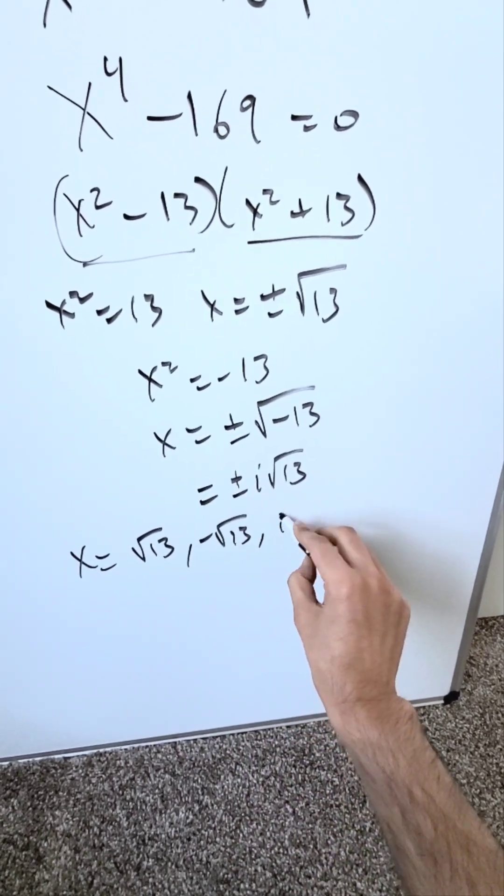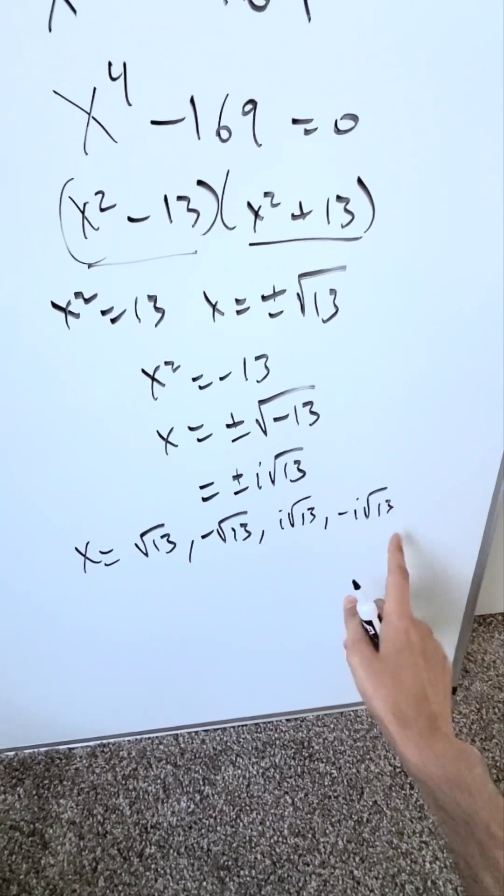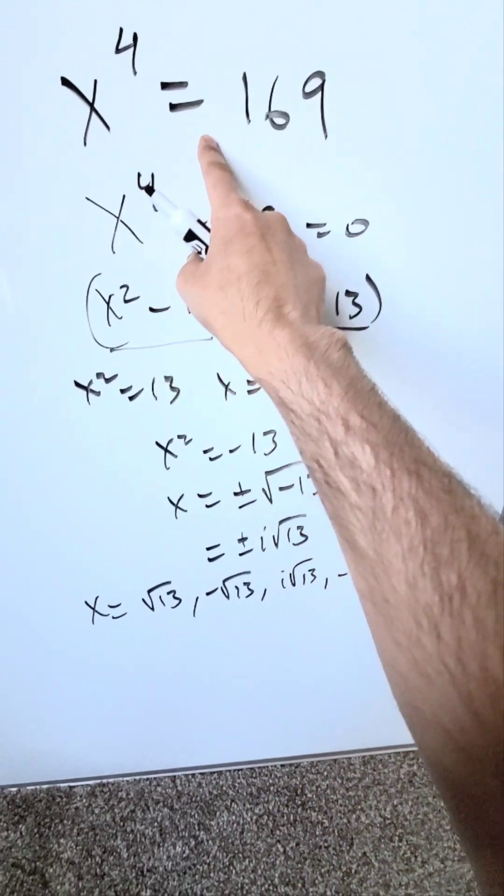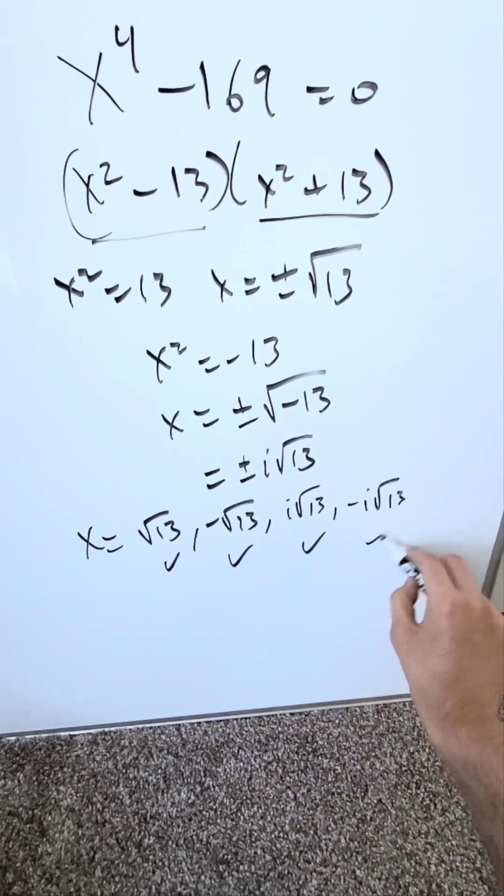One would be a positive i root 13. The other would be a minus i root 13. You would technically put each of these into your original equation and check them out and they would work out. Each of these will be determined to be a correct answer.